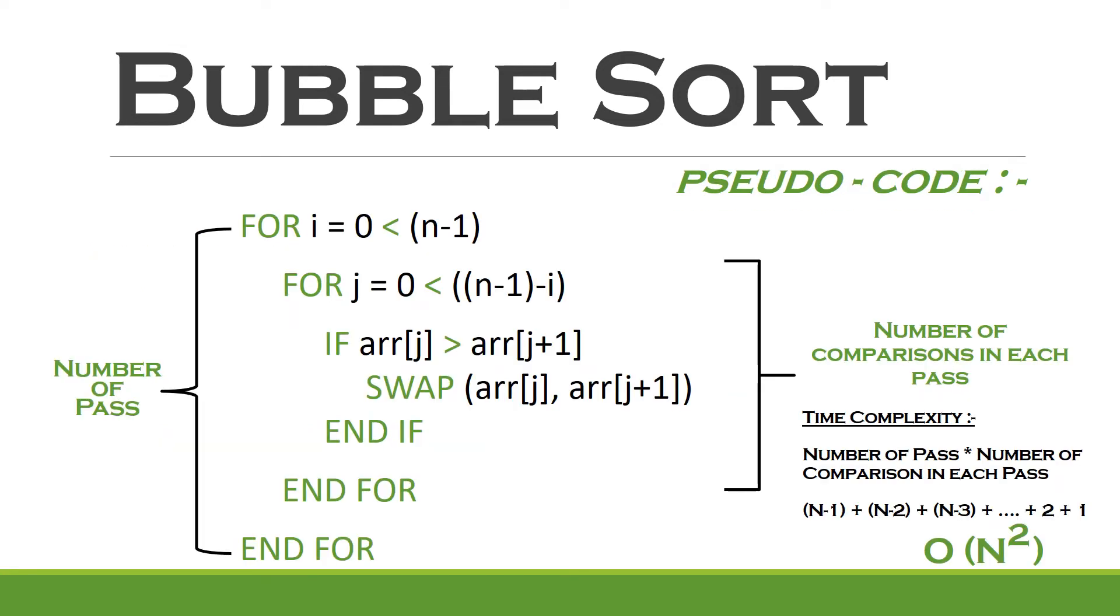This was the pseudocode for bubble sort we have already seen. If you try to observe it carefully, you will see a catch here. Even the best case scenario of this algorithm is O(n²).